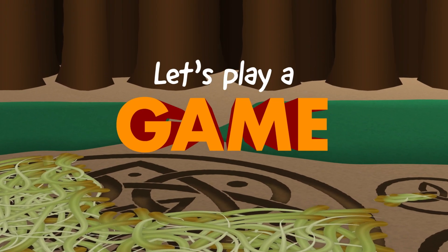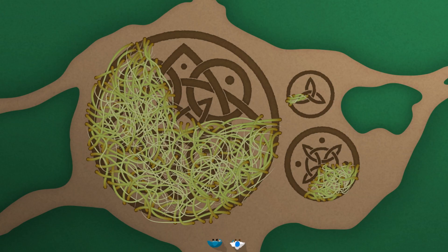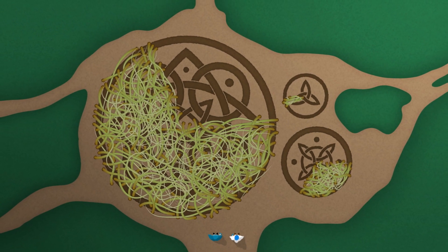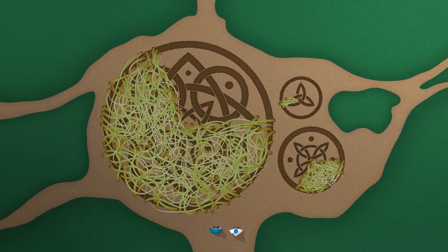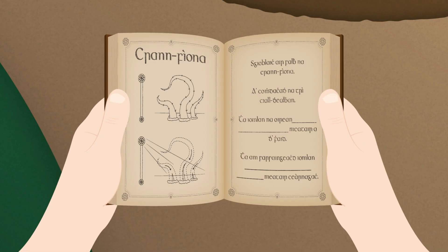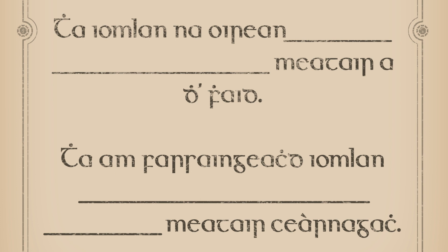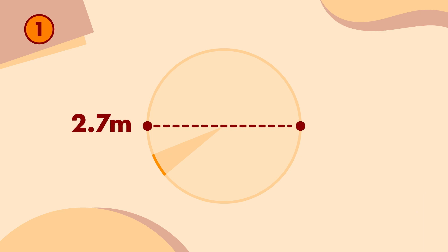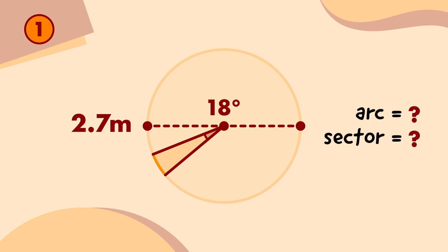Let's play a game. After a quick walk, Will and I have found another forest with emblems that are all covered in vines. To clear away the vines and summon more Wills of the Wisp, I want you to work out the arc length and sector area for the bits of each emblem circle that are covered. Here's the first one. My measuring staff tells me that its diameter is 2.7 metres, and the central angle of the covered portion is 18 degrees.